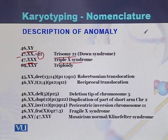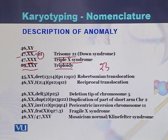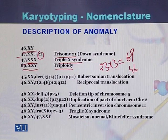If written as 69,XXY, it means triploidy. Triploidy means each set of chromosomes consists of three chromosomes instead of two. Normally there are 23 pairs, but if we multiply 23 by 3 we get 69. So instead of 46 chromosomes, such individuals have 69 chromosomes. This phenomenon is called triploidy.